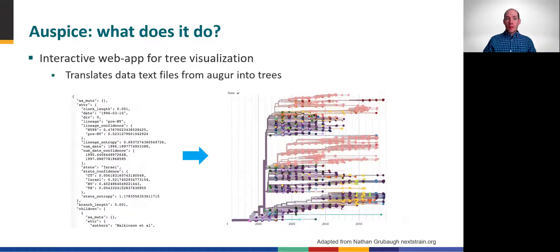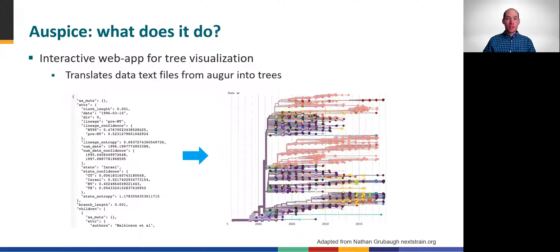This JSON format is a structured text file that Auspice then translates into the trees, maps, and other images, and importantly, allows the user to interact with those visualizations. This is certainly an oversimplification to provide an introductory understanding for the purpose of the training toolkit. I encourage you to visit nextstrain.org if you're interested to learn more about how these applications really work.